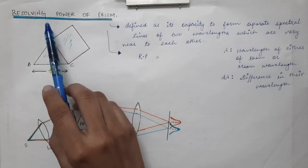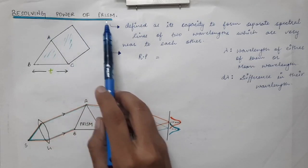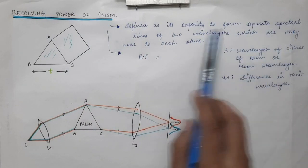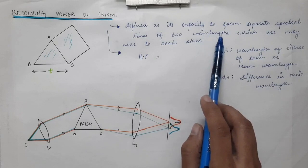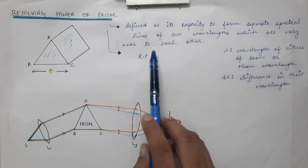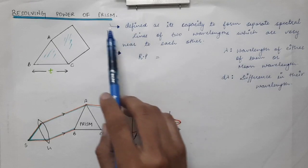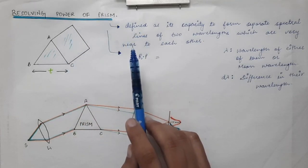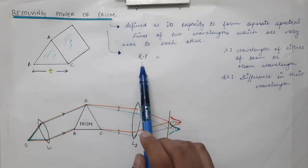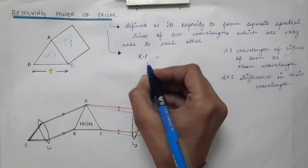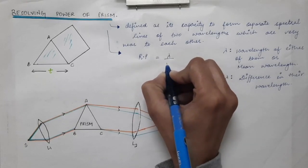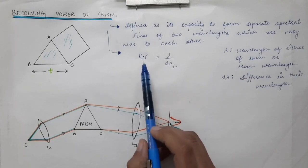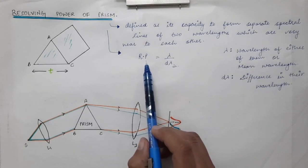In this lecture we will discuss the resolving power of a prism. It is defined as the capacity of the prism to form separate spectral lines of two wavelengths that are very near to each other. The definition of resolving power in the case of a prism is the same as that of the diffraction grating, and it is given by the formula lambda divided by d_lambda.